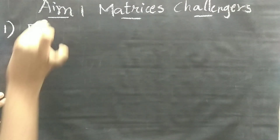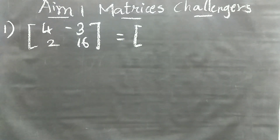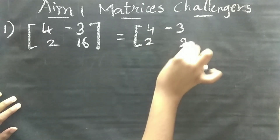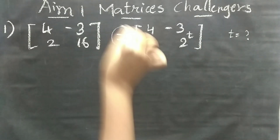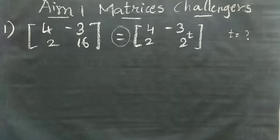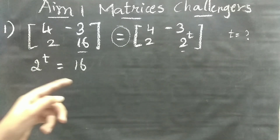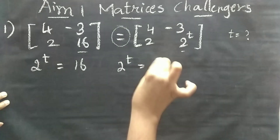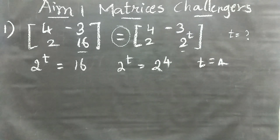The question gives the matrix [4, -3; 2, 16] equal to the matrix [4, -3; 2, 2^t]. We have to find t. Since these are equal matrices, corresponding elements are equal, so 2^t = 16. Expressing 16 as a power of 2, we get 2^t = 2^4. Since the bases are equal, the powers are also equal, therefore t = 4.